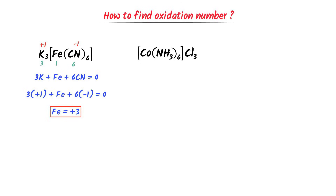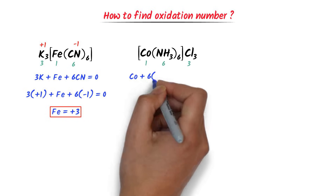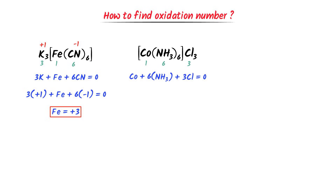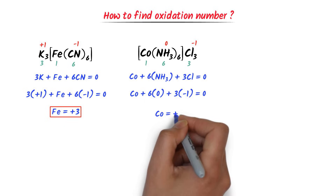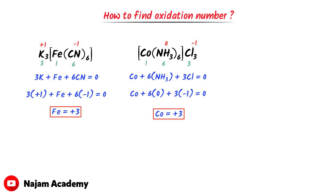Consider [Co(NH3)6]Cl3. There is one cobalt atom, six molecules of NH3, and three chlorine atoms. Since the total charge is zero: Co + 6(NH3) + 3(Cl) = 0. NH3 is a neutral molecule (oxidation state = 0) and chlorine has oxidation state −1. So: Co + 6(0) + 3(−1) = 0, giving Co = +3. The oxidation state of cobalt is +3.